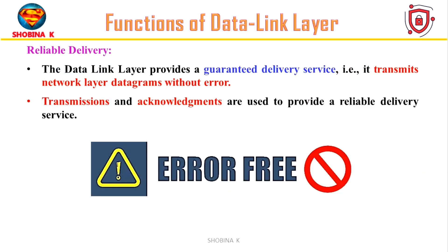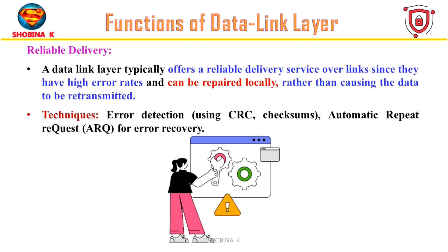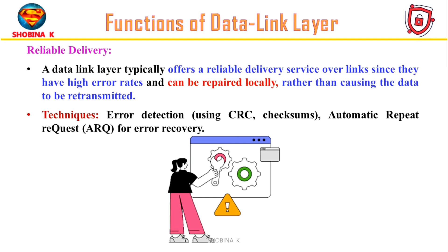Moving further, we have the function of Reliable Delivery. Reliable Delivery ensures that frames are transmitted and received accurately and reliably. This may involve error detection and retransmission mechanisms to recover from transmission errors. The data link layer usually provides reliable delivery over links because it can fix errors locally, which reduces the need for data to be resent.